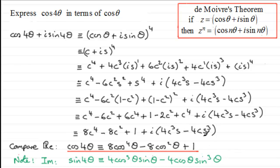So this is the fundamental method for expressing either the cosine or sine of a multiple angle in terms of cosθ or sinθ: apply De Moivre's theorem, expand the resulting bracket using the binomial expansion, then compare either the real parts or imaginary parts depending on what the question requires. I hope that's given you a clear idea of how to approach this type of problem.